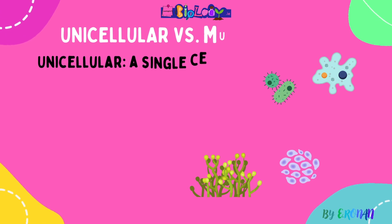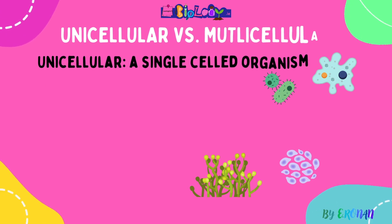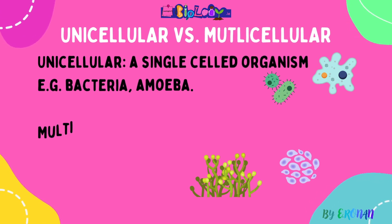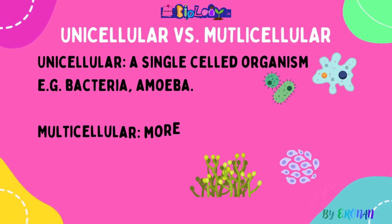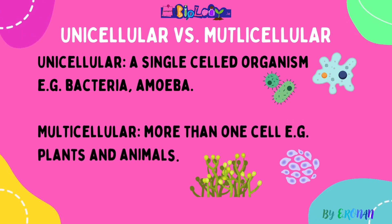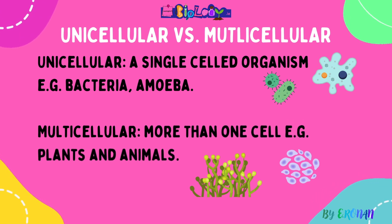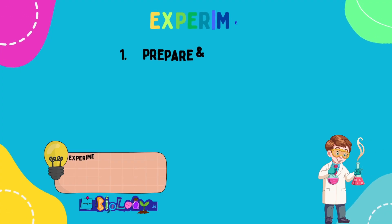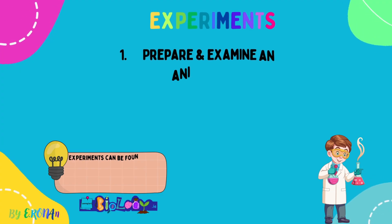Unicellular means a single-celled organism — for example, bacteria and amoeba. Multicellular means more than one cell — for example, plants and animals. These words can cause confusion, so be sure to learn them clearly.